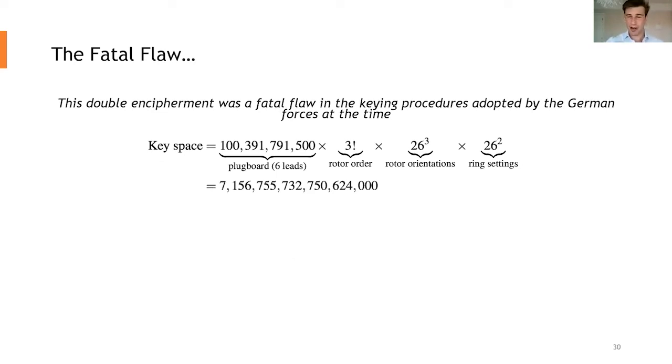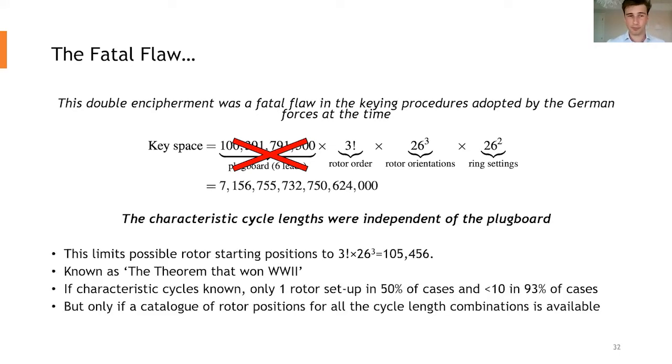Now this encipherment, Rejewski's theory, showed that this double encipherment was a fatal flaw in the keying procedures adopted by the German force at the time. So what you're seeing here is a calculation of the key space Tim was talking about earlier, which is that 7 billion billion number of possible setups. Now to put it into context, if anyone remembers a yellow page book, the last time I checked there's 350,000 entries in the yellow pages. So that's some 20 million million yellow pages. There's a lot of different permutations there. What Rejewski showed there in his theorem, which is absolutely phenomenal, was that the characteristic cycle lengths, so those lengths that I showed 4994 earlier, were completely independent of the plugboard.